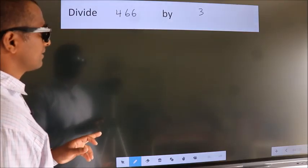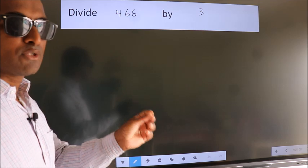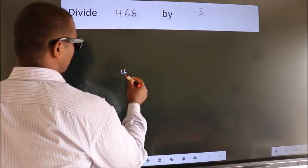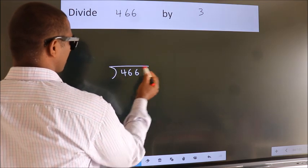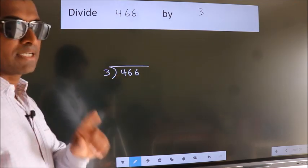Divide 466 by 3. To do this division, we should frame it in this way. 466 here, 3 here. This is your step 1.